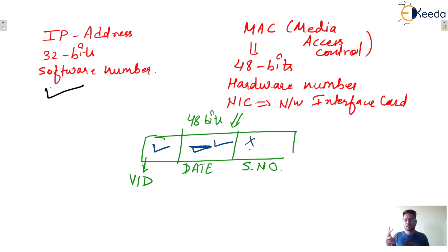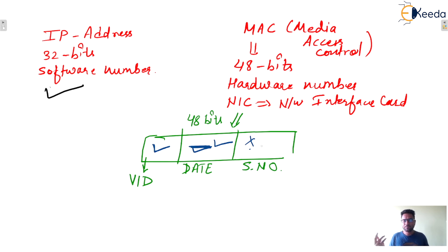Let's say two systems are manufactured by the same vendor and the date is also the same — then the serial number will be different. If the vendor ID is different, then there is no problem. Ultimately, no two systems can have the same MAC address — at least they will differ by vendor ID, if not by date, and if not, then guaranteed they will differ by serial number.